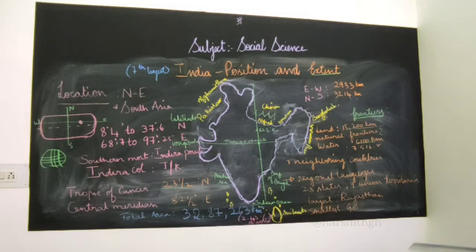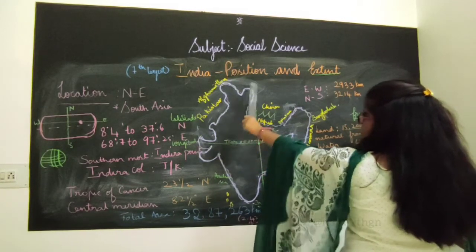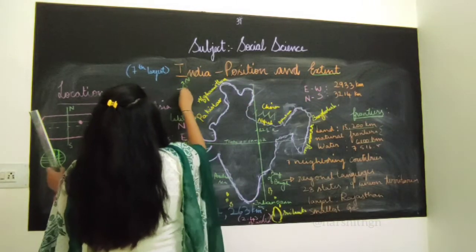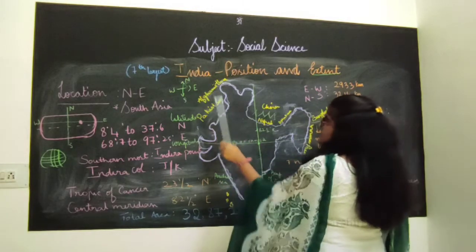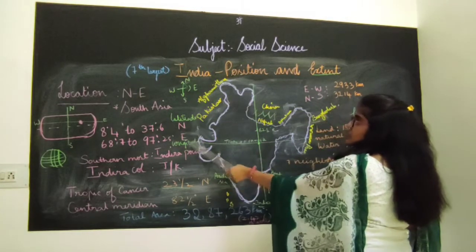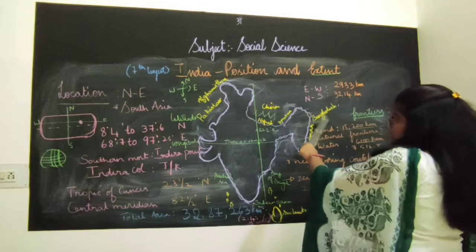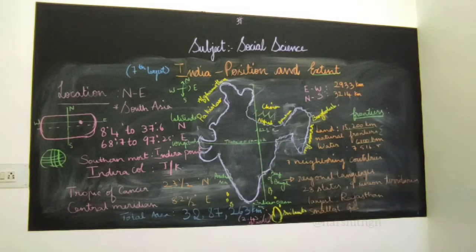India has 7 neighboring countries. Pakistan is to the northwest; Afghanistan is also to the northwest. China and Nepal are to the north. On the east side, Bangladesh and Myanmar share borders with India. Sri Lanka is to the south. These are the neighboring countries of India.